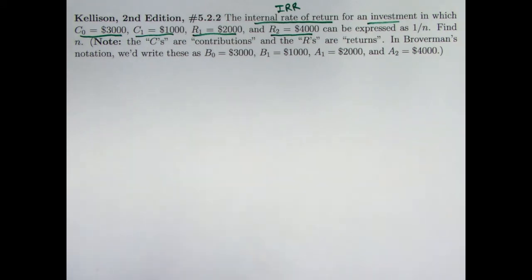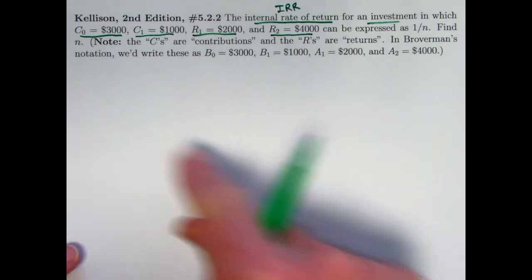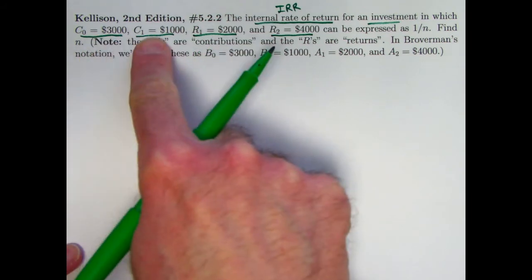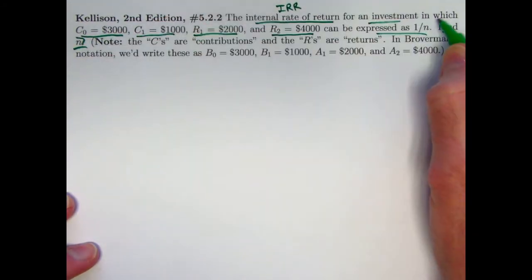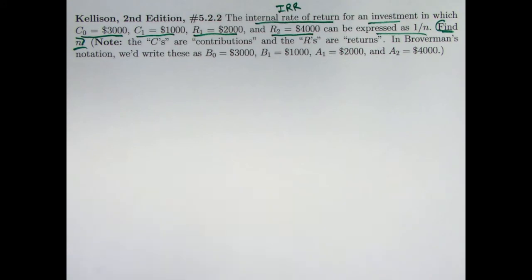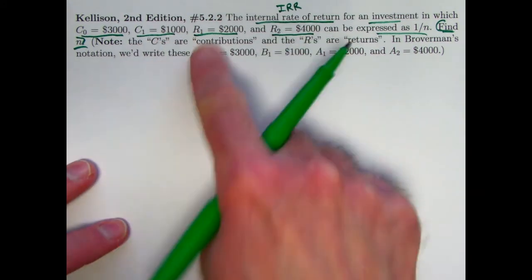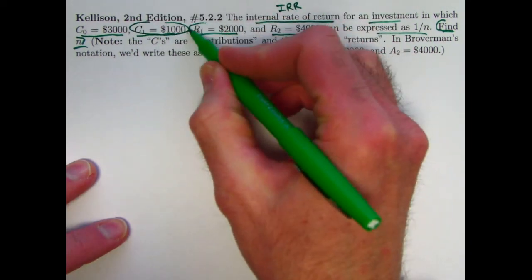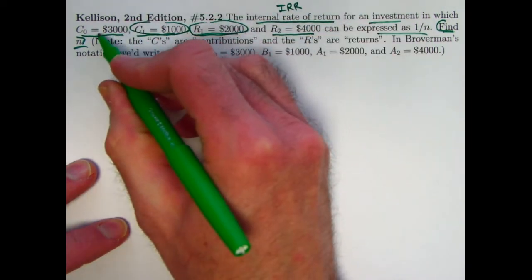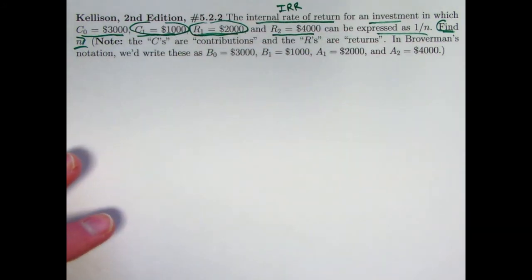A word of warning: when I first started trying to solve this problem, I implicitly assumed the times were 0, 1, 2, and 3. I assumed this was a C0, C1, R2, and R3, and it did lead me to not getting an answer, not being able to find an integer n so that the IRR could be expressed as 1 over n. My problem is I didn't look at the subscripts carefully enough. Make sure you look at the subscripts. This is occurring at time zero, both of these at time one, and this one at time two.